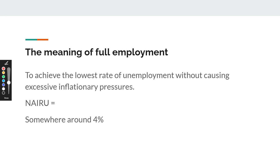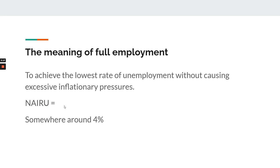One other thing: some textbooks will call this the natural rate of unemployment. For VCE purposes, we're going to assume that the natural rate of unemployment and the NIRU are exactly the same thing — the same target of 4.25%.